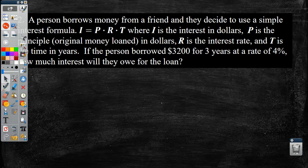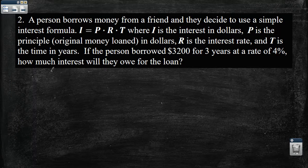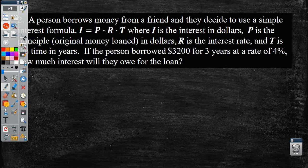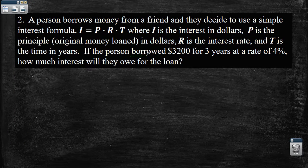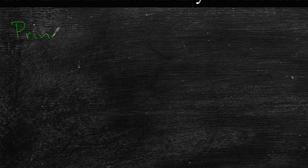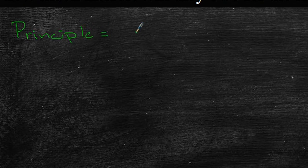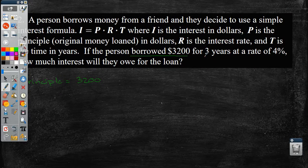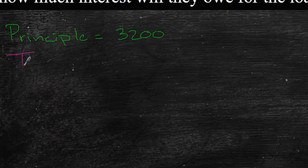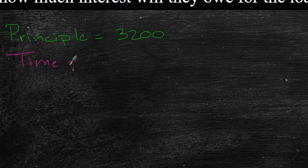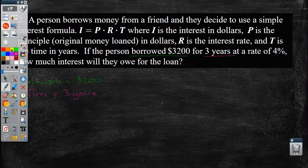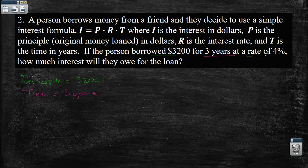So let's grab us a pencil here. So let's identify the important information. First thing I'm going to identify is the principal. That's going to be right here, how much they borrowed. So principal, $3,200. The next thing we're going to identify is the time. That's 3 years. And then finally, we have our interest rate, which is 4%.